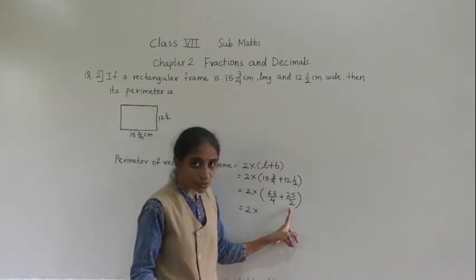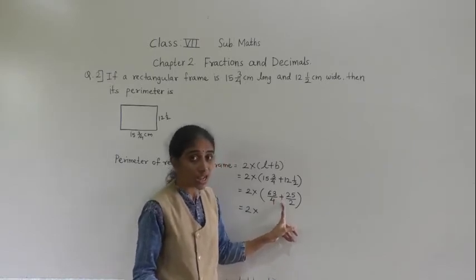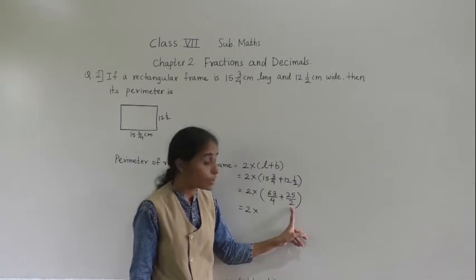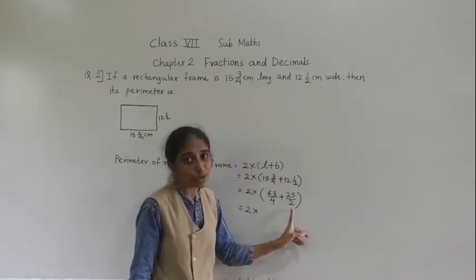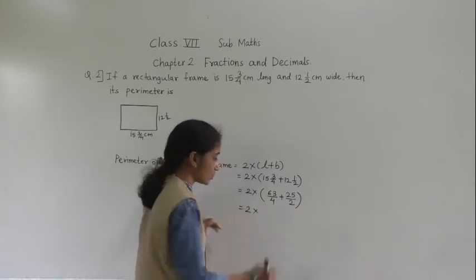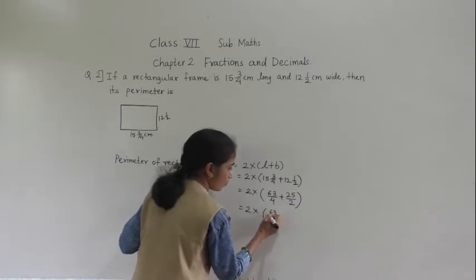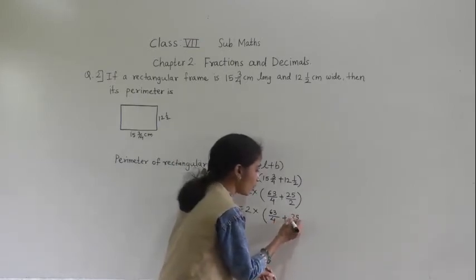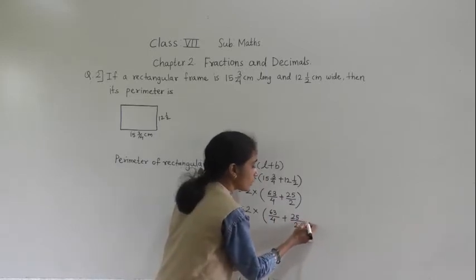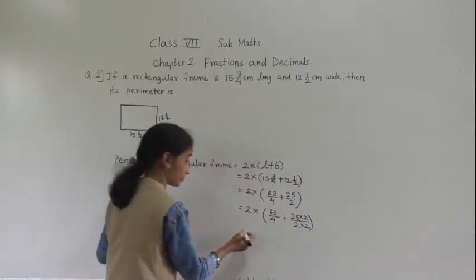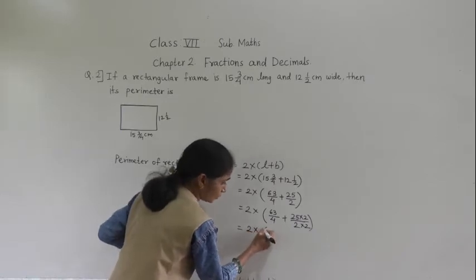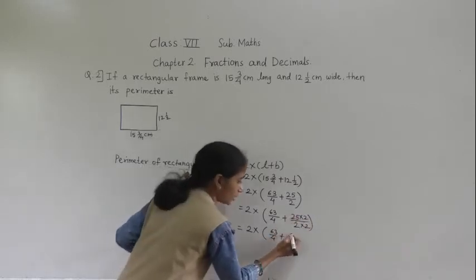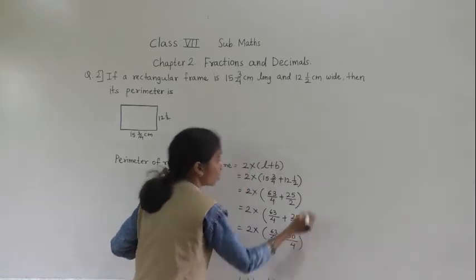Now solve the bracket first. Denominators are not the same, so we need to find LCM of 4 and 2. LCM is 4. Write 63 upon 4 as it is. For 25 upon 2, multiply numerator and denominator by 2: 2 twos are 4, so 25 twos are 50, giving 50 upon 4.